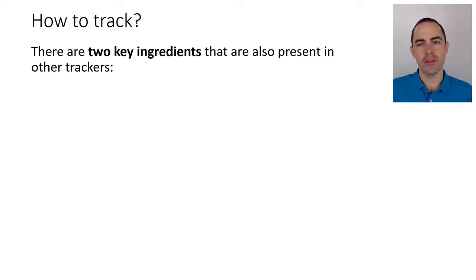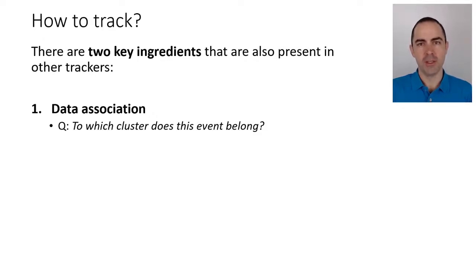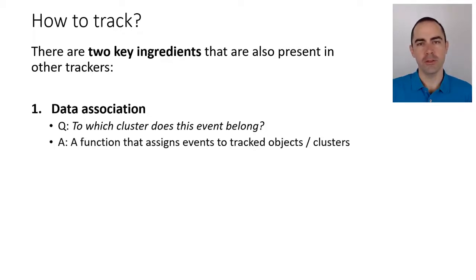There are two key ingredients in tracking methods. One is data association: to which cluster does this event belong? We are processing each event independently, and for each incoming event we ask which object or cluster it belongs to. The answer requires a function that assigns events to tracked objects or clusters — that's the data association.